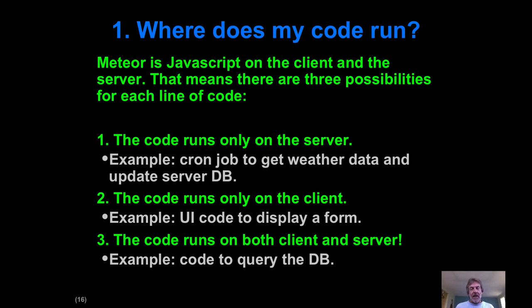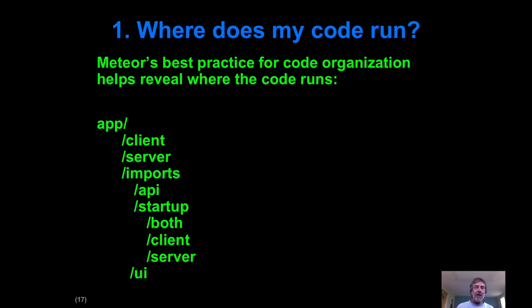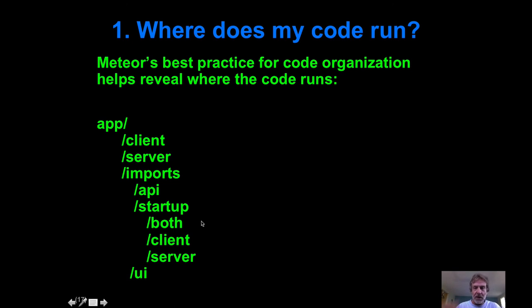So how do you keep track of where code runs? The Meteor people recommend organizing your code so that the directory structure tells you. If you see a directory called `/client` at the top level, that code only runs on the client. If you see `/server`, it runs only on the server. A `/both` directory has code that runs on both client and server. The `/api` directory also runs on both client and server. It's not quite as easy as you'd hope, but once you wrap your head around it, it's a pretty good organization.